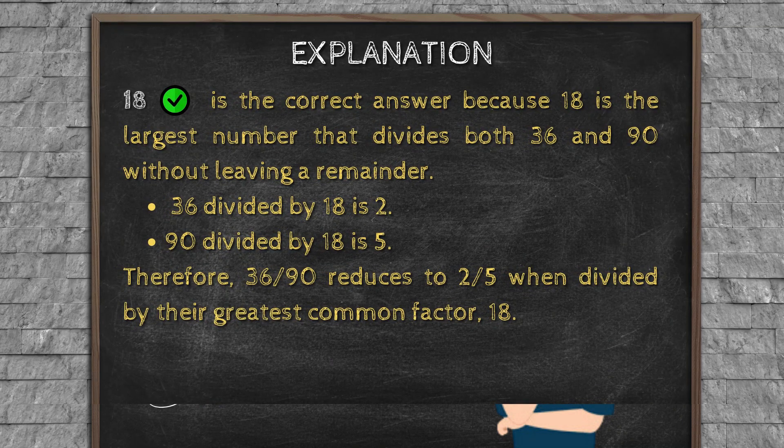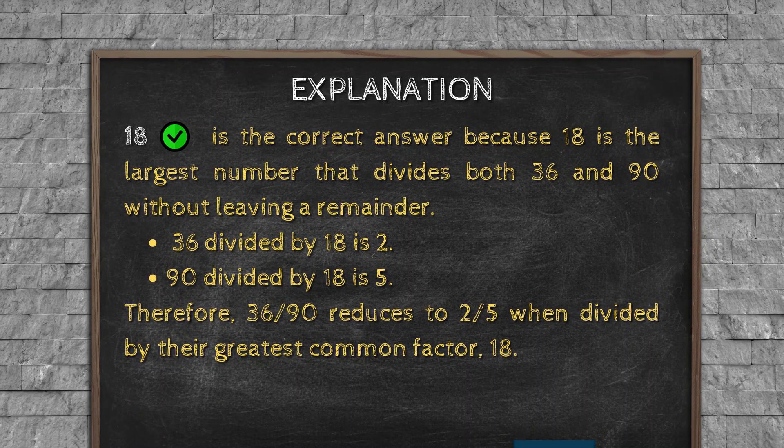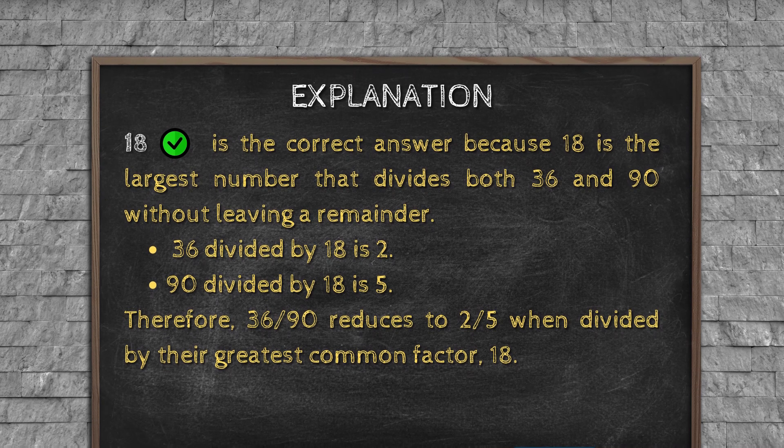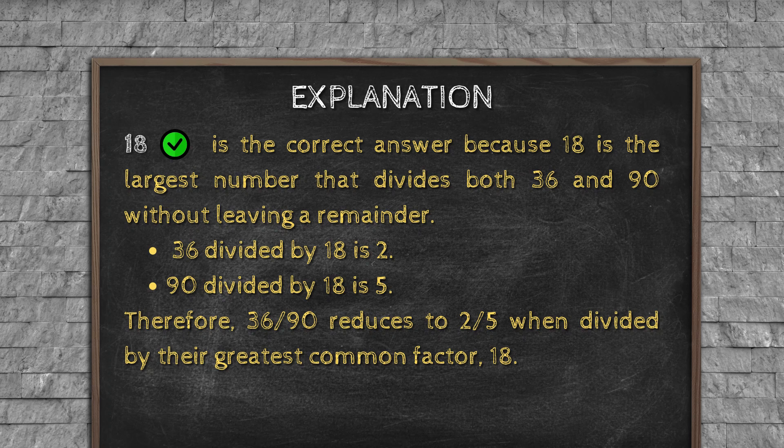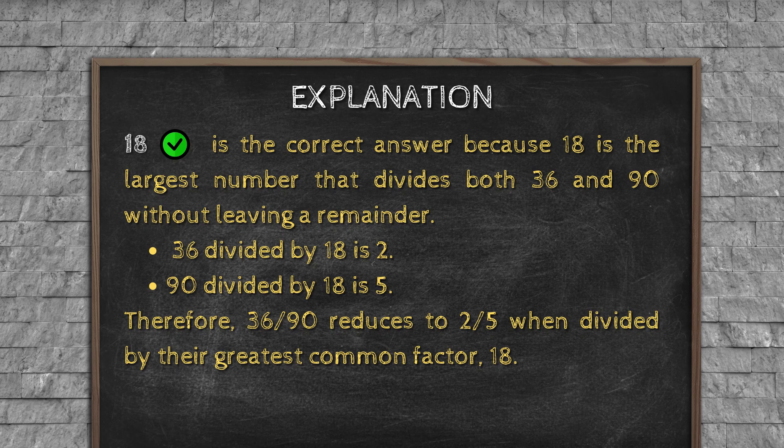Explanation: 18 is the correct answer, because 18 is the largest number that divides both 36 and 90 without leaving a remainder. 36 divided by 18 is 2. 90 divided by 18 is 5. Therefore, 36/90 reduces to 2/5 when divided by their greatest common factor, 18.